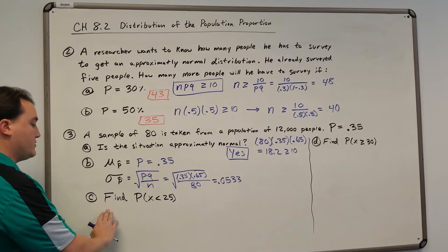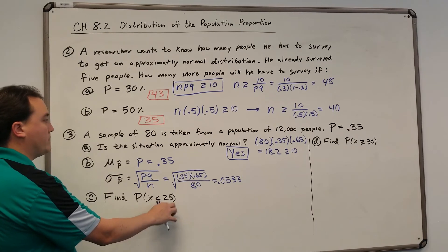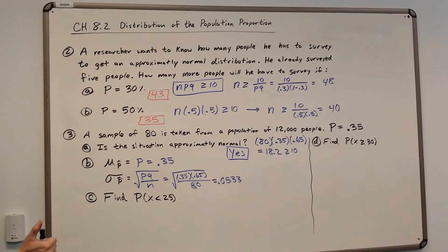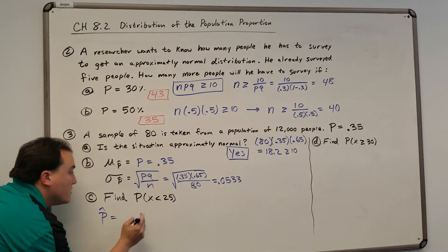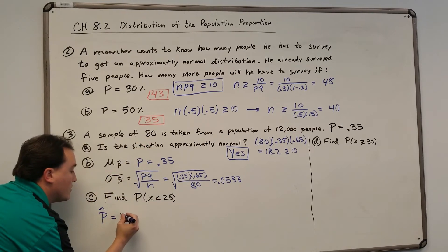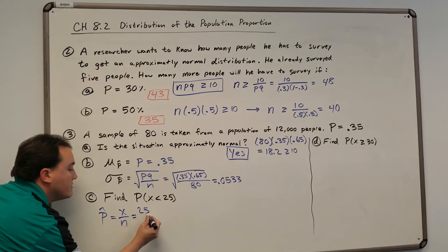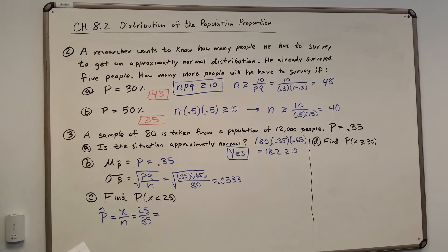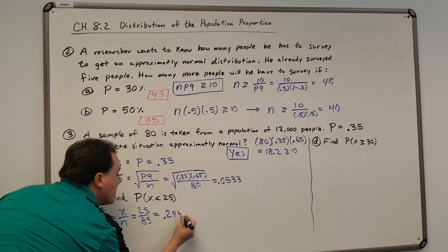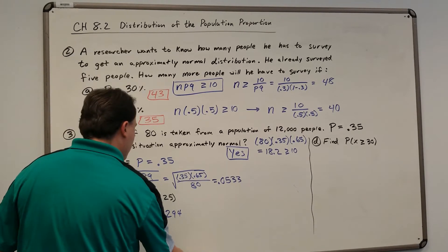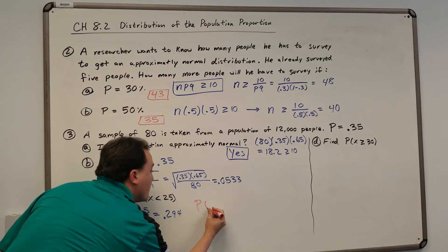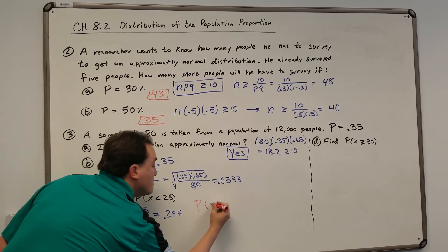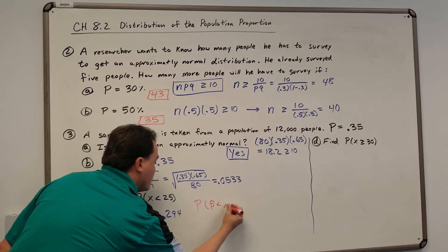We want to find the probability that X is less than 25 people from our sample of 80. The first thing we need to do is find the proportion. That's 25 divided by 80, which is X divided by N. We get 0.294. So the problem becomes: find the probability that P-hat is less than 0.294.